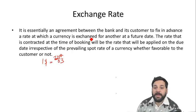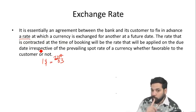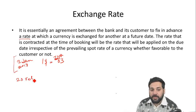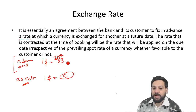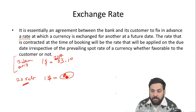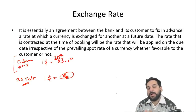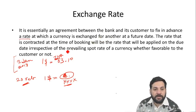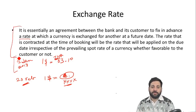In the agreement, the bank and its customer fix in advance the rate at which the currency will be exchanged at the future date. For example, today is 3rd January 2018. They decide in advance that on 28th February, the bank will purchase 1 dollar — maybe at 63.10 — depending on whether the Indian rupee is at a discount or at a premium. This predetermined rate at the time of booking will be the rate applied on the due date.